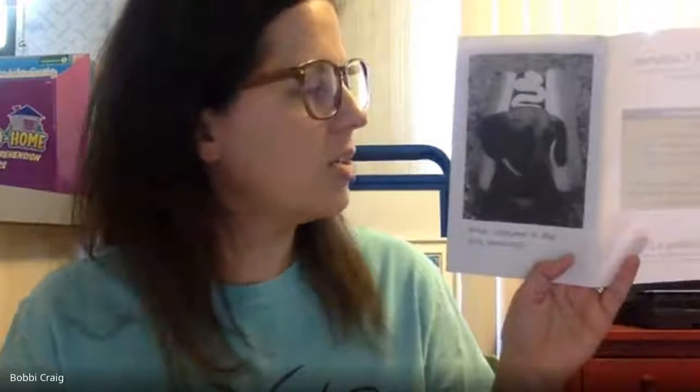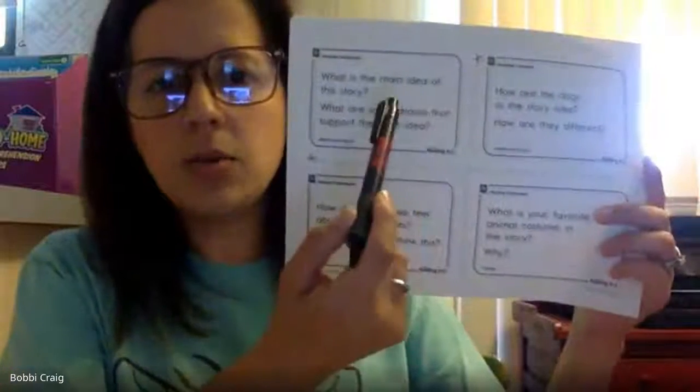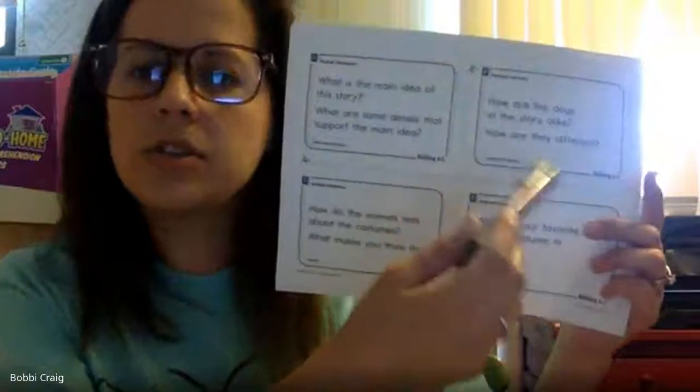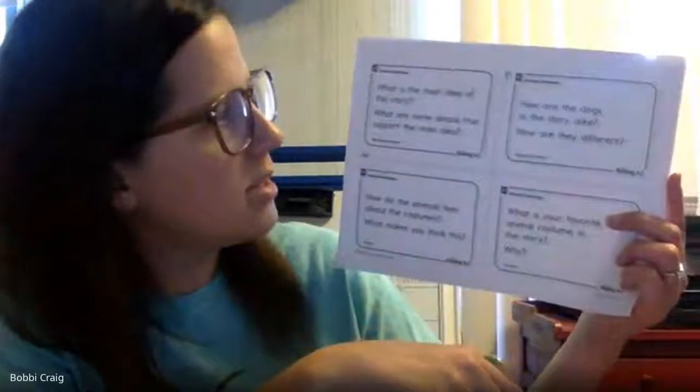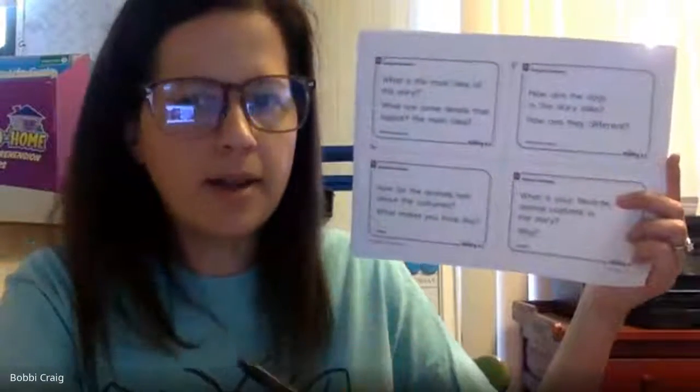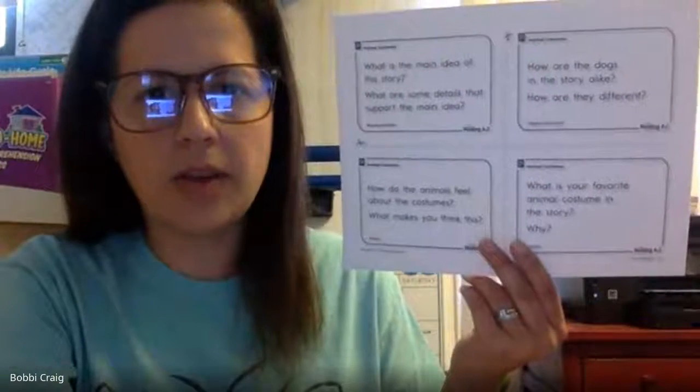Grab your worksheet. This week it's a little different — it's got four squares, and there are four different questions based on the text we've read. You can cut those out and write the answers on the back, or just flip it over and number your answers one, two, three, four. The first question is in the top corner: 'What is the main idea of this story? What are some details that support the main idea?'